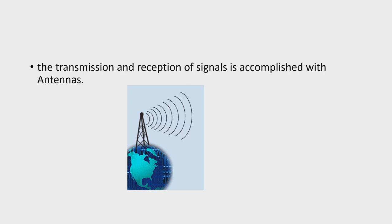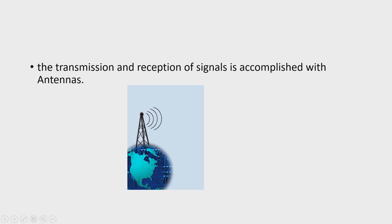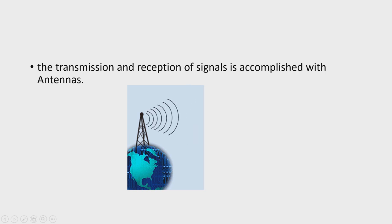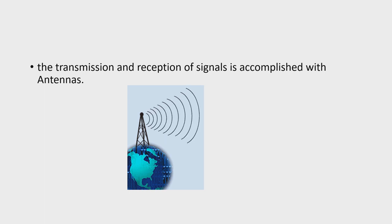The most important component which makes wireless communication possible is the antenna. Antenna is used for transmission and reception of the signals. It is a device which converts electrical signal to electromagnetic waves, and electromagnetic waves back to electrical signal, depending on whether it is a transmission antenna or reception antenna.